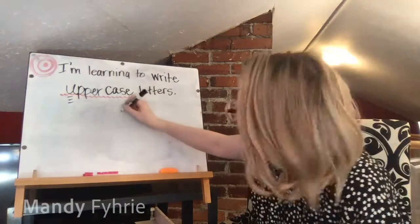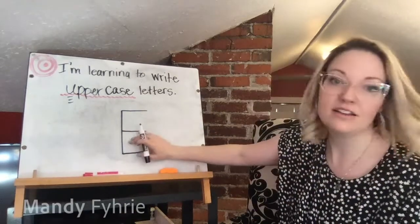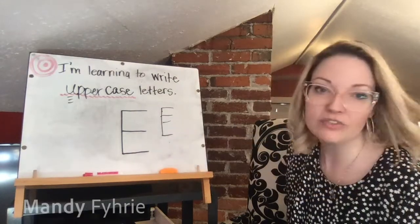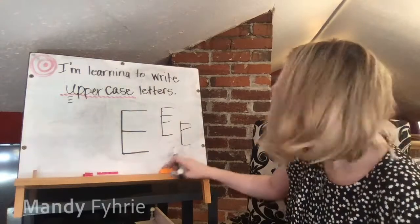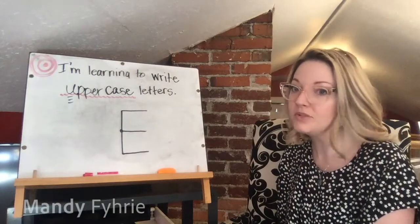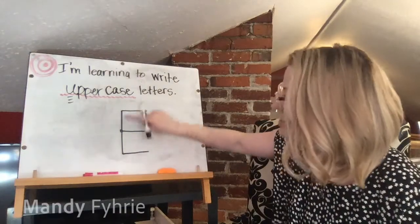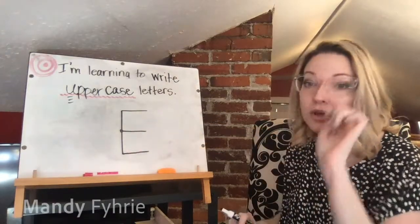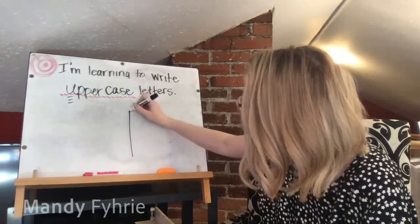Capital E: big line down, three little lines across. Big line down, hop to the top, three little lines across. If your E is looking wonky, you can put a dot in the middle — just like with letter B — to help you remember where to go. Say it with me as you practice: big line down, hop to the top, three little lines across — one, two, three. Saying the words helps with your writing.